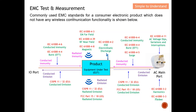As briefly discussed in the Part 45 series, these slides show all the commonly used EMC standards for a consumer electronics product that does not have any wireless communication functionality. The device under test has no wireless communication at all. You can see there are two cables — one connected to the AC main and another as the I/O port — and these are all the tests needed for such a product.